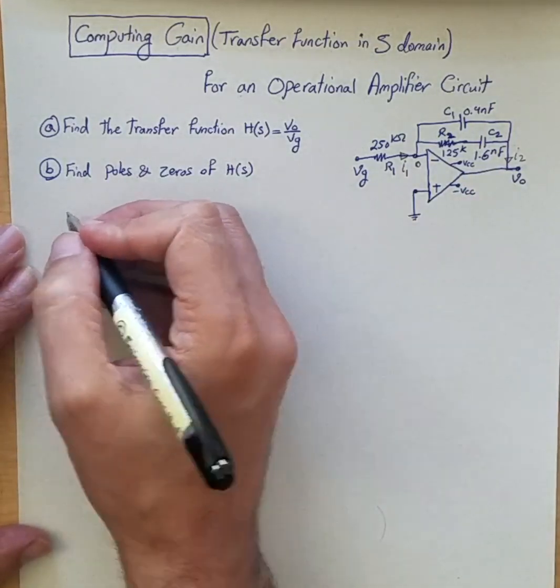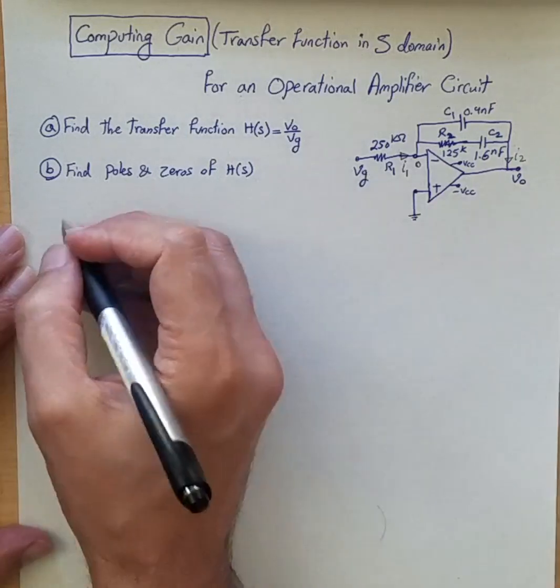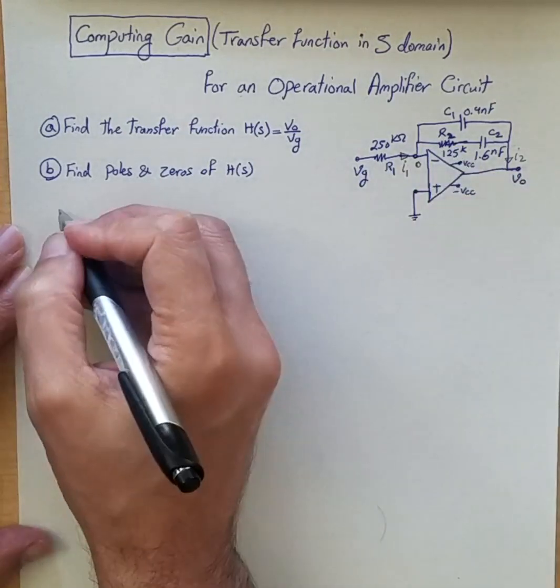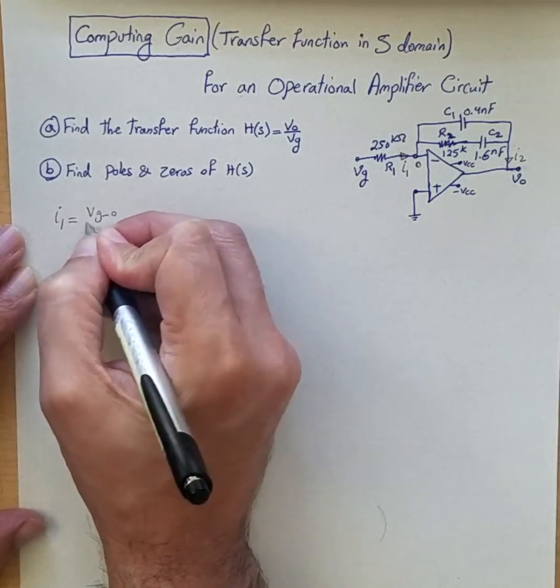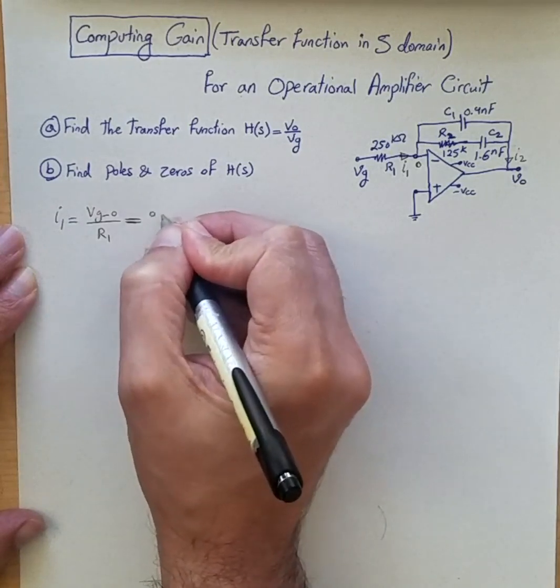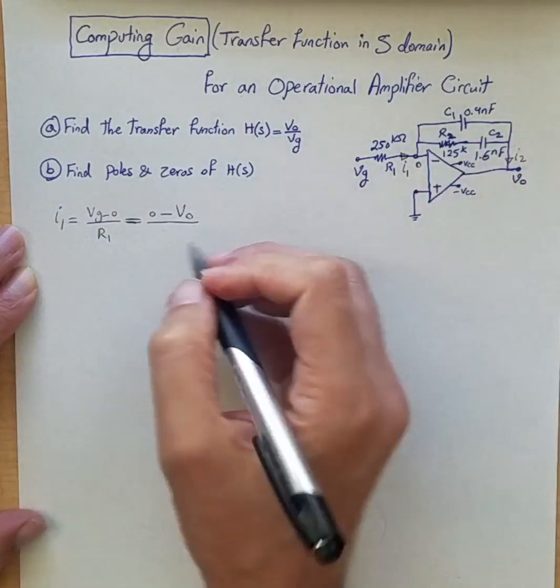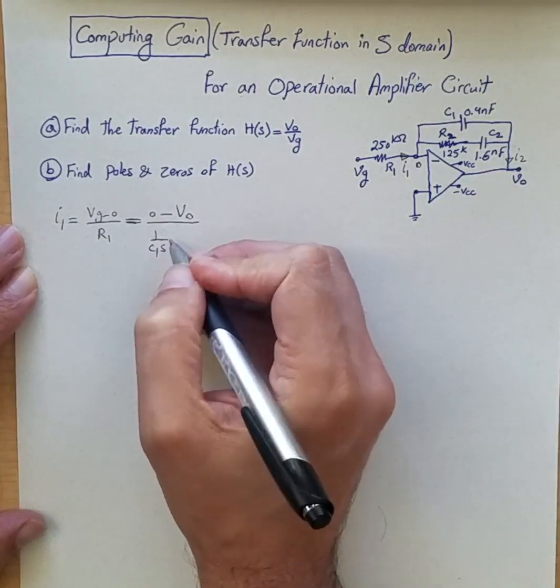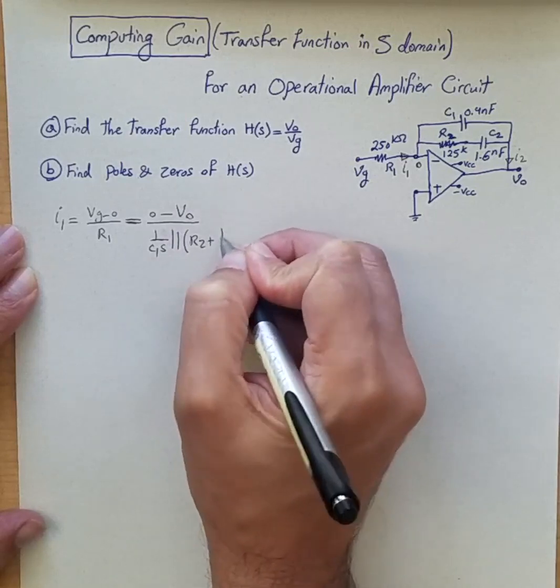So it's just a matter of if we want to go with brute force, it's a matter of just writing that a very simple KCL here. So we can say I1 is equal to VG minus 0 divided by R1 and then we can say it's equal to 0 minus Vout divided by the total impedance that is seen here, which is effectively 1 over C1 S, that is the impedance for capacitor C1 in parallel with R2 plus 1 over C2S.